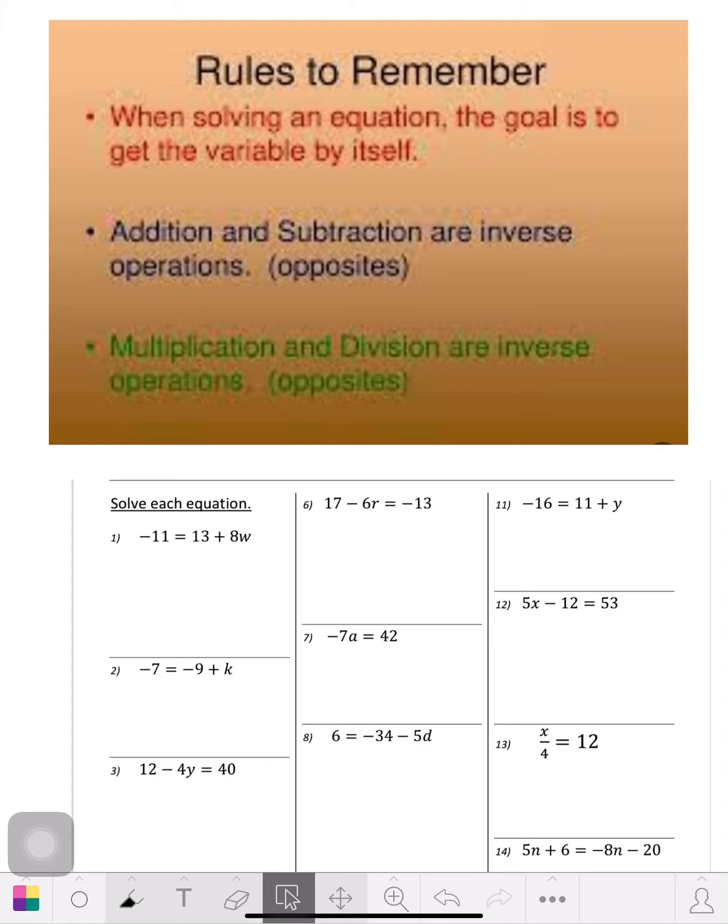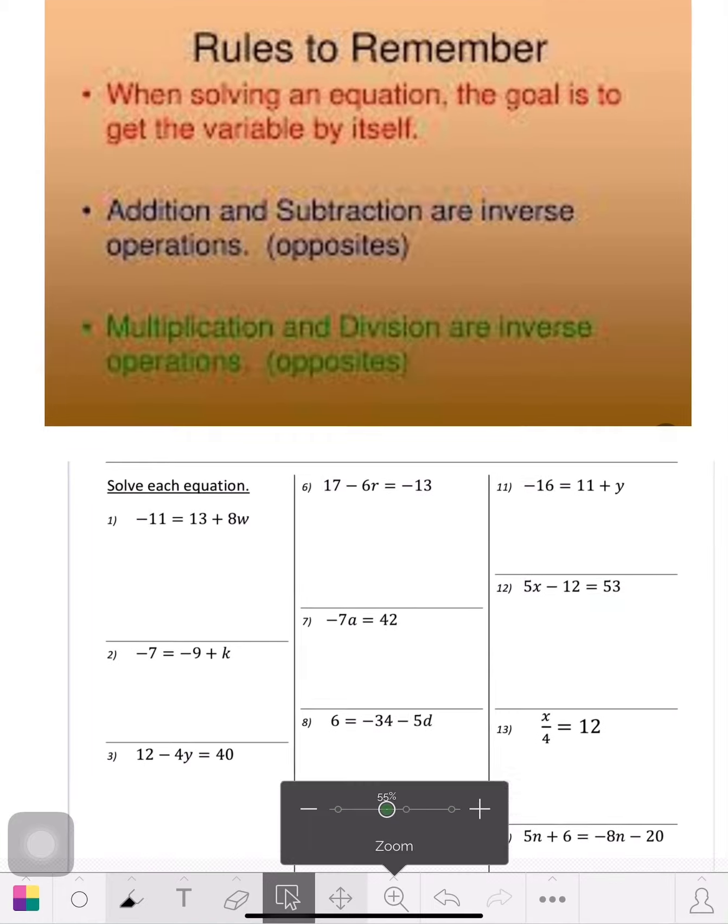If you look at the example below, what you have is the problem: negative 11 equals 13 plus 8w. What I always do first is get rid of the constant, which would be the 13. So that's how I'd start this problem.